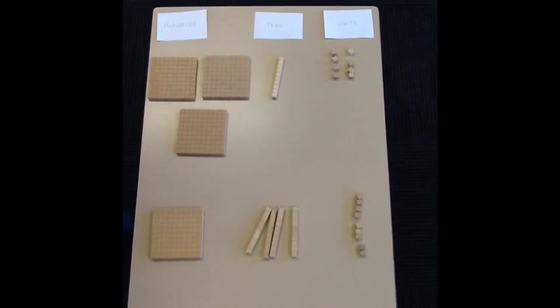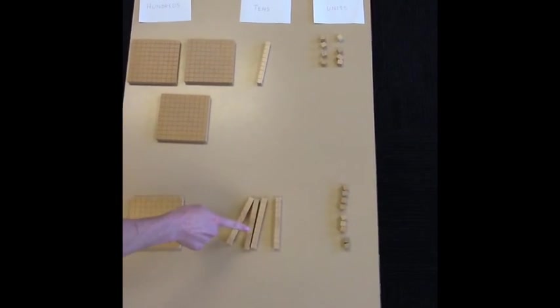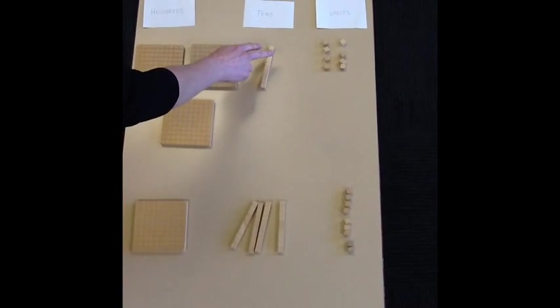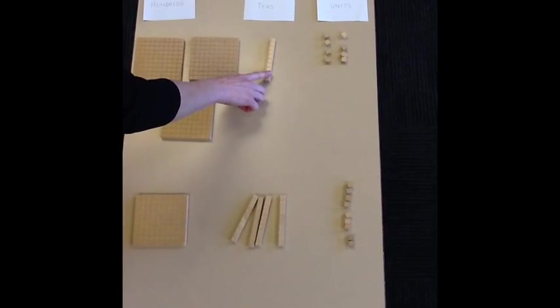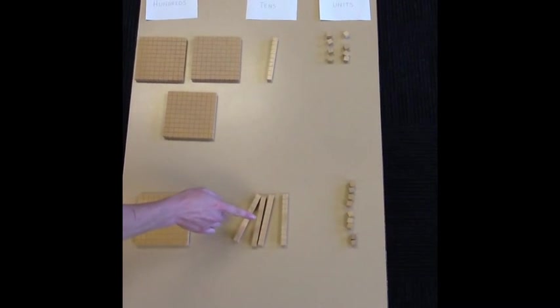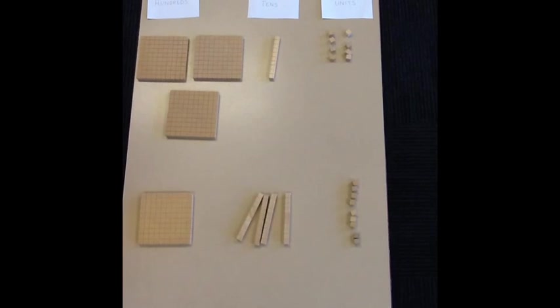Now we're going to go across to our tens column. We're looking at 1 take away 4. You'll notice that initially we had 2 tens, but we had to do some trading. So now we're only left with 1. Can we take 4 tens away from 1 ten? No, we can't. So again, we'll do some trading.